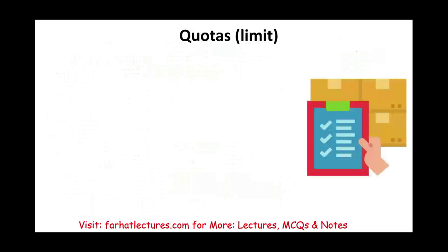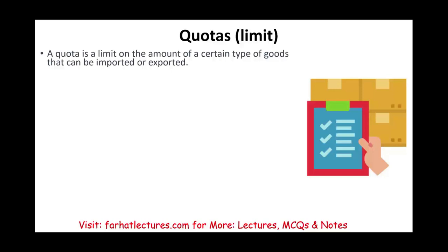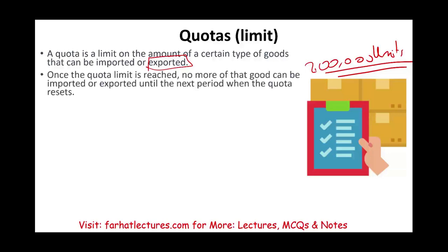Another way to control international trade is something called quotas — simply put, it's a limit. A quota is the limit on the amount of certain types of goods that can be imported or exported. Here, you are not placing a tax; you're telling them they can bring the product but are limited to 200,000 units or whatever quantity is set. Or you can do this for exports, as we saw with NVIDIA — for example, you can export 100,000 AI chips to the Chinese market. Once the quota is reached, no more of that good can be imported or exported until the next period when the quota resets.